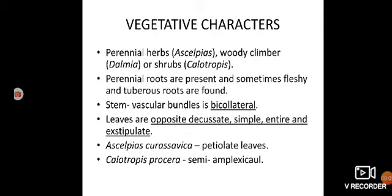Regarding vegetative characters of Asclepiadaceae: perennial herbs (e.g., Asclepias), woody climbers (e.g., Daemia), and shrubs (e.g., Calotropis). Perennial roots are present; sometimes fleshy and tuberous roots are found. Stem vascular bundles are bicollateral. Leaves are opposite, decussate, simple, entire, and exstipulate. Leaves may be superposed or decussate — in superposed, orientation of leaves at two nodes is parallel; in decussate, orientation is perpendicular. In Calotropis procera, leaves are semi-amplexicaul, meaning the lower lobes of the leaves slightly cover the stem axis.